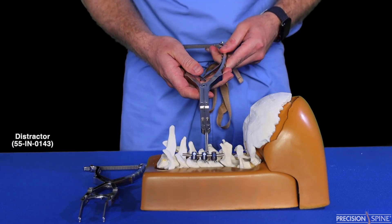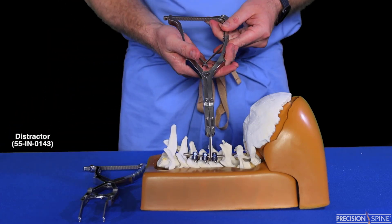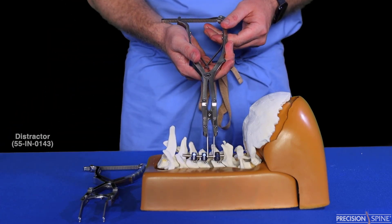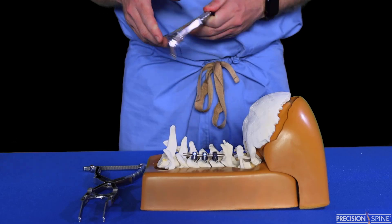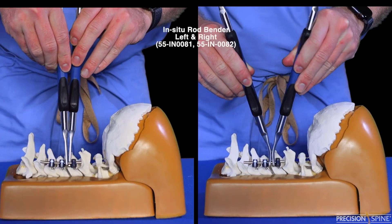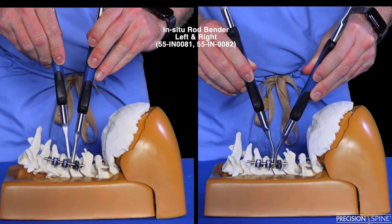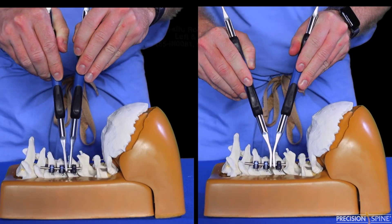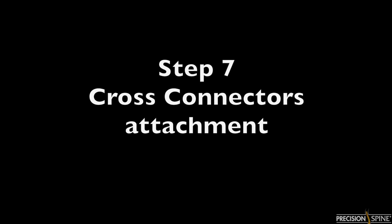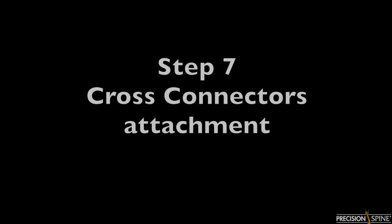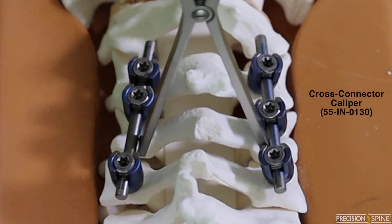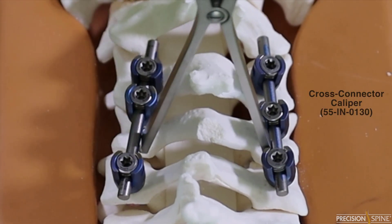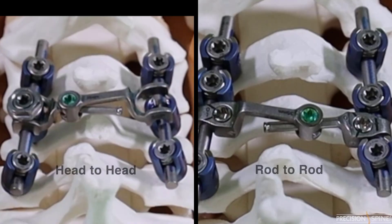The distractor is utilized by placing the arms of the distractor between the two tulips you want distracted. Step 6: In situ rod bending is achieved with the in situ benders. Step 7: Cross connector attachment. First, measure to determine the size of cross connector needed. There are two types of cross connectors that can be utilized: rod to rod or head to head.